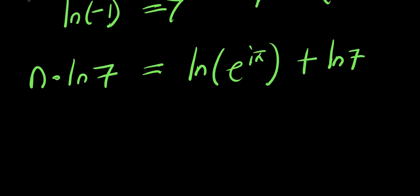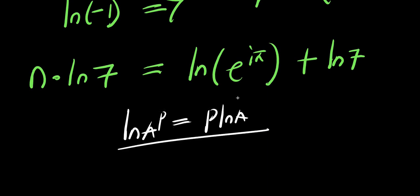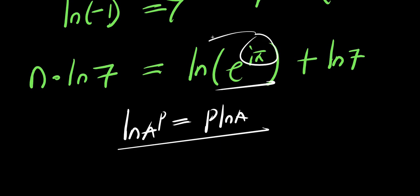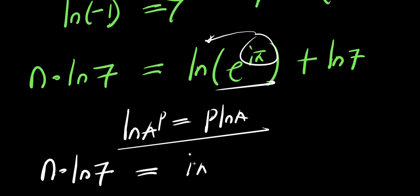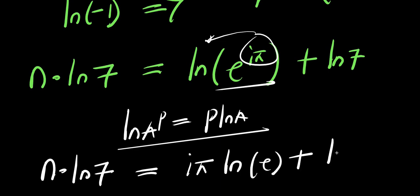Now remember, natural log of a to the power of b equals b times natural log of a. Applying that here, the i times pi comes out front, so we have n times natural log of 7 equals i times pi times natural log of e, plus natural log of 7.